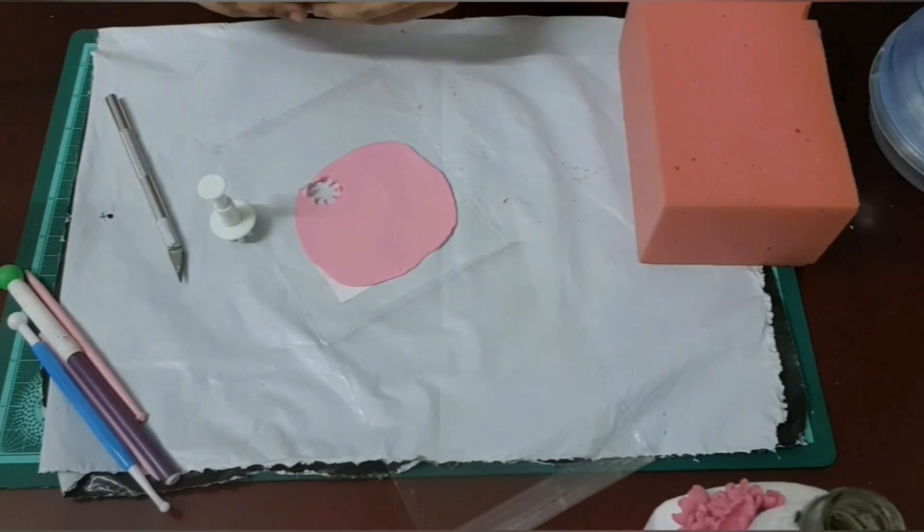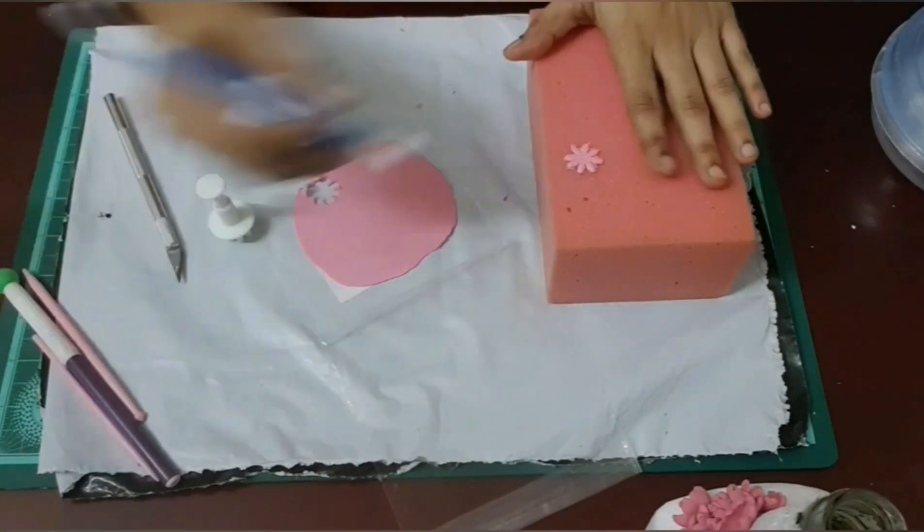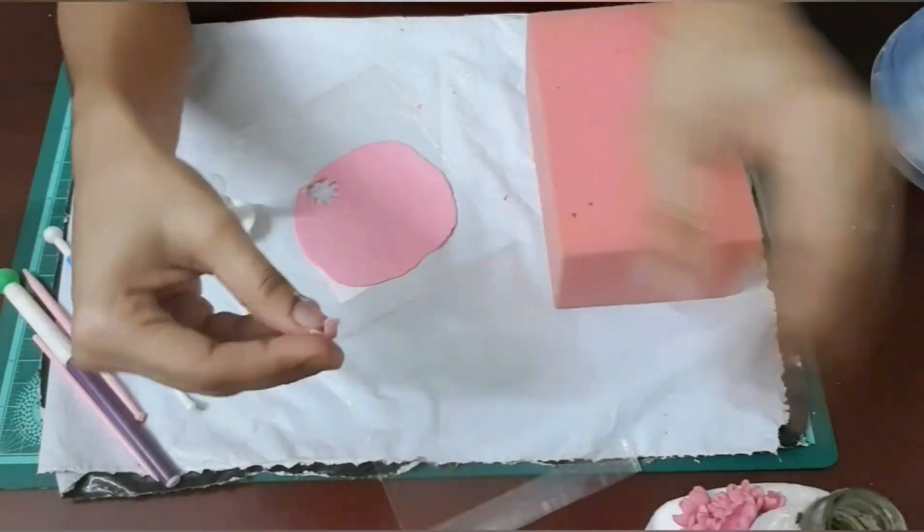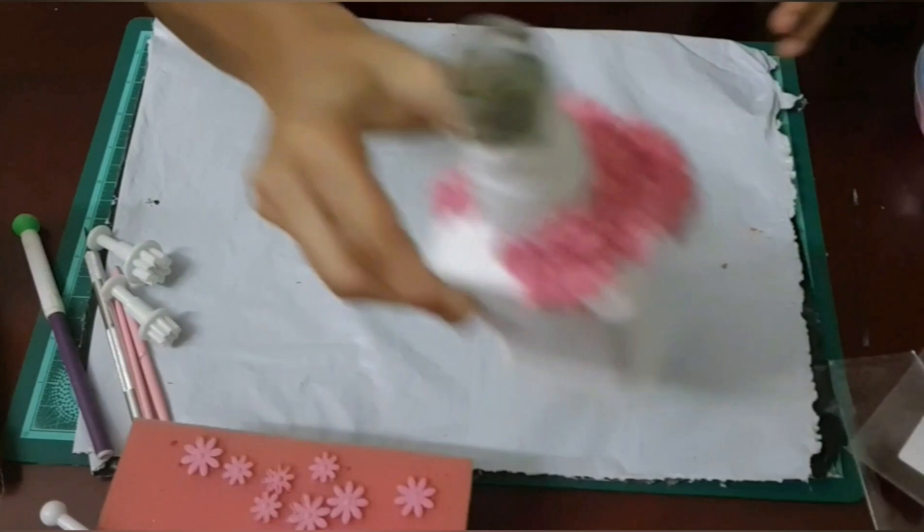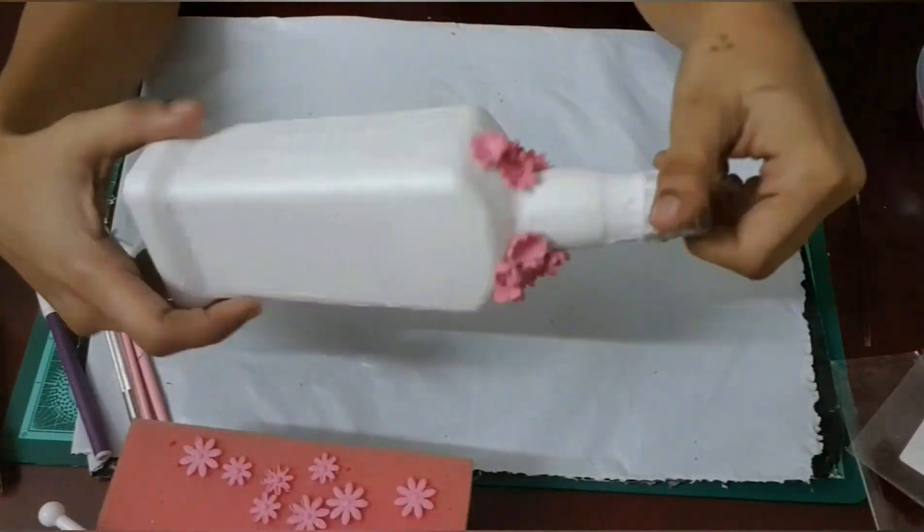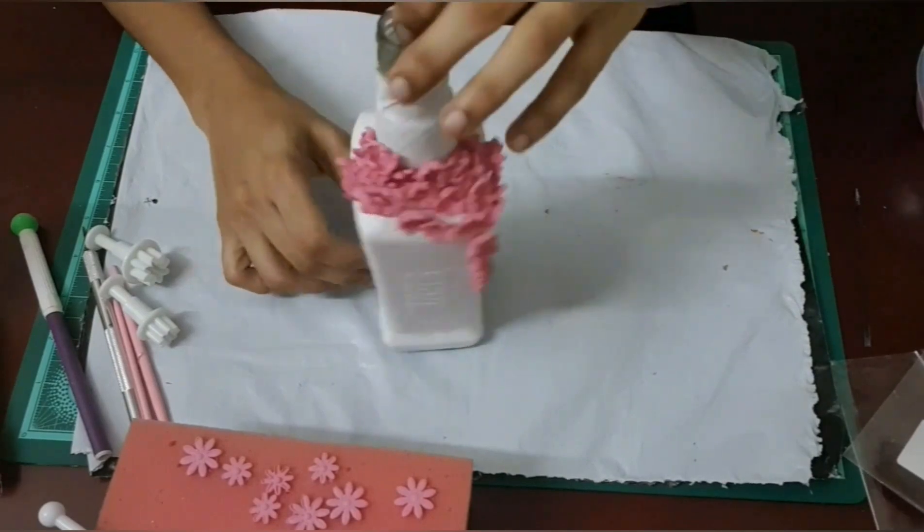I have a ball tool here to give a raised depth to it like this and I will be sticking them like this. I am just going to arrange them on top of the bottle alone. As I have shown here I am done with one side and I have a few left.